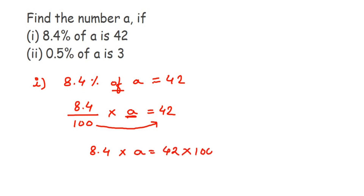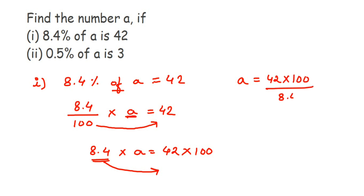Now I want to transpose 8.4 as well. Since 8.4 is in multiplication, when transposed it comes into division. So: a = (42 × 100) / 8.4. Now I don't want the decimal, so I remove the decimal sign. Since there is one digit after the decimal in 8.4, we get 10 in the numerator. If there are two digits after the decimal, you'd get 100, and so on.